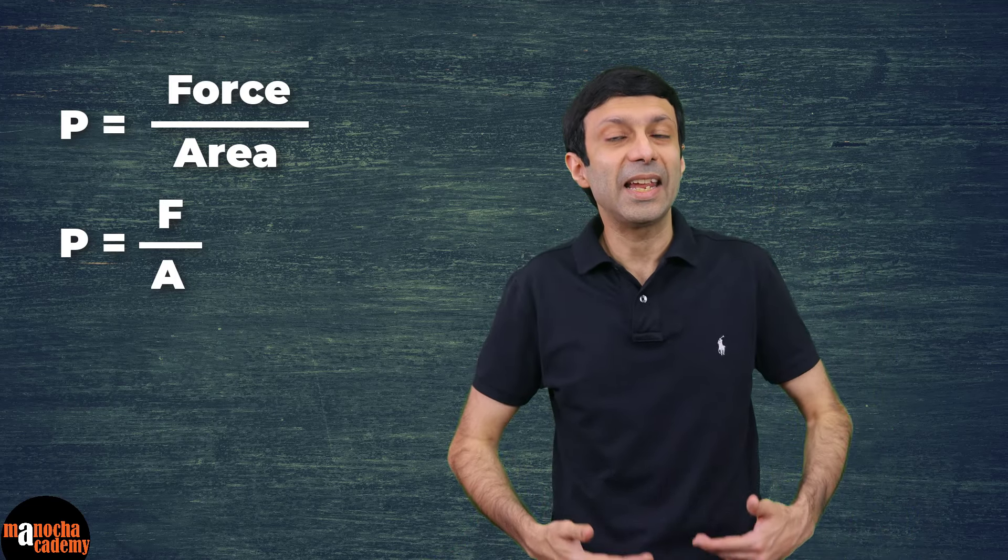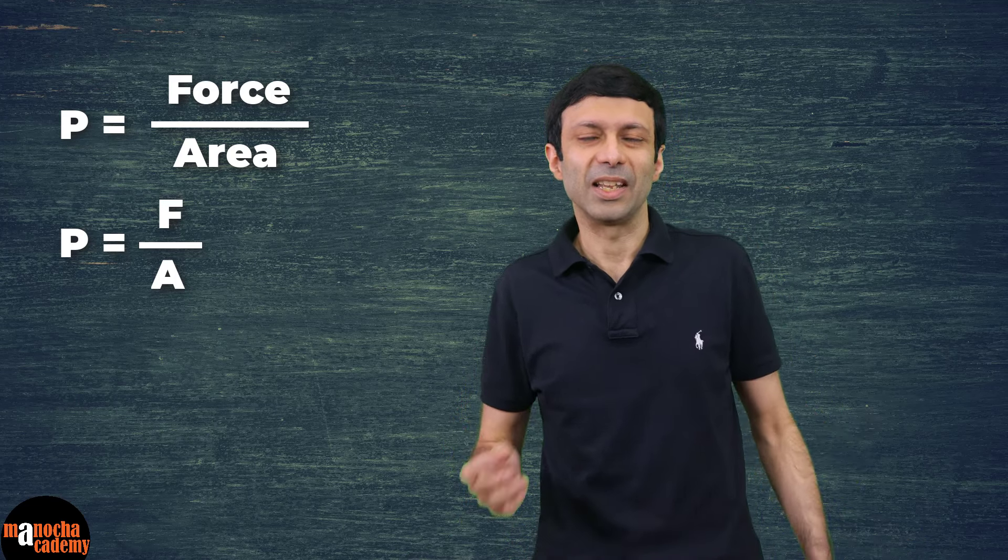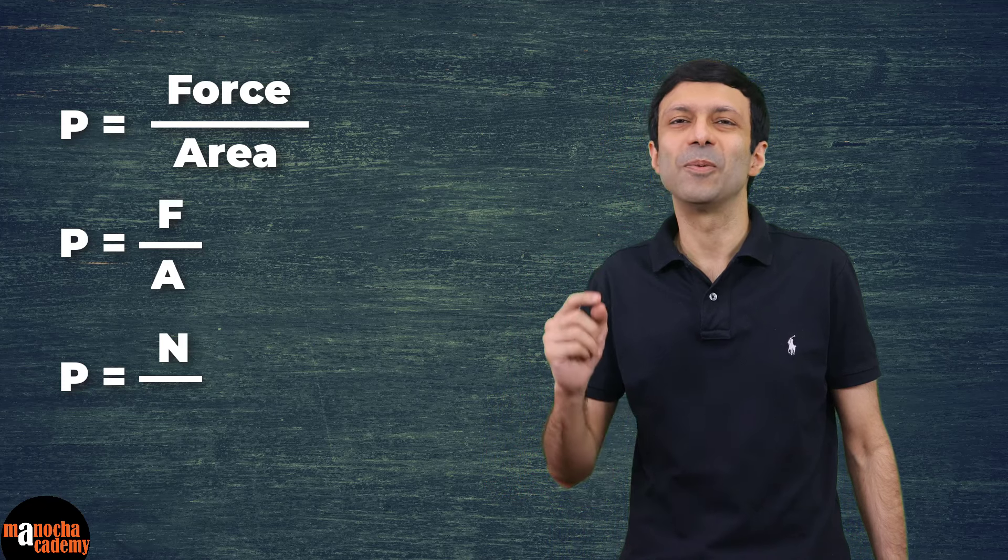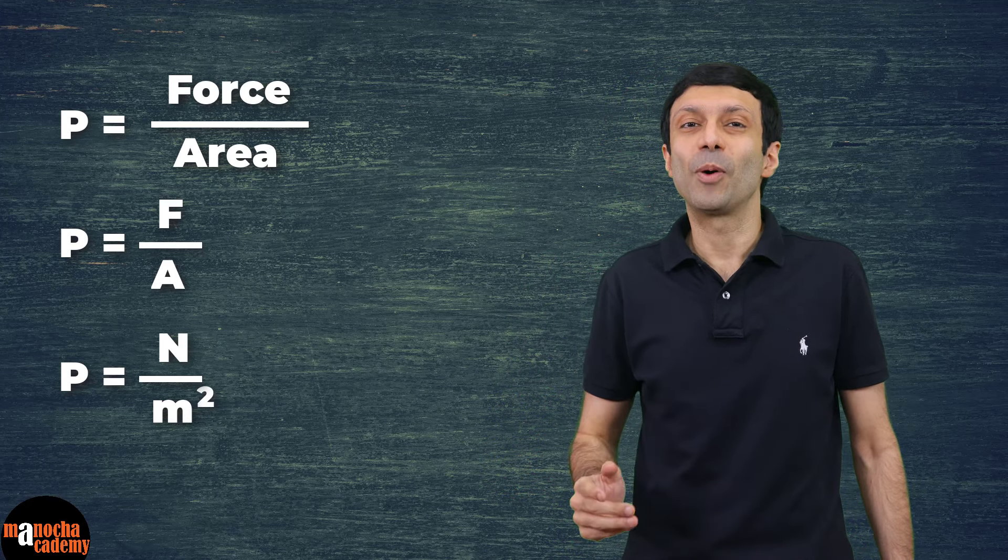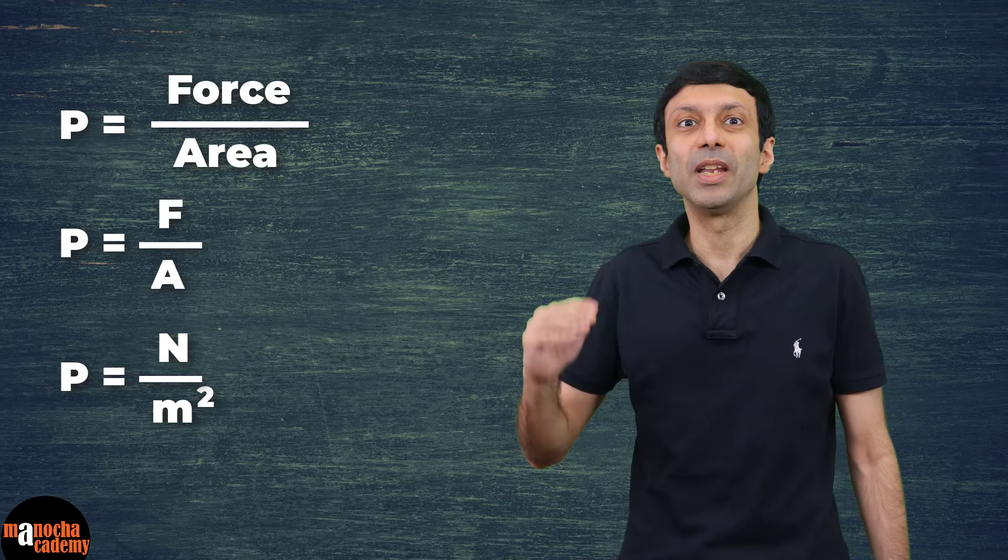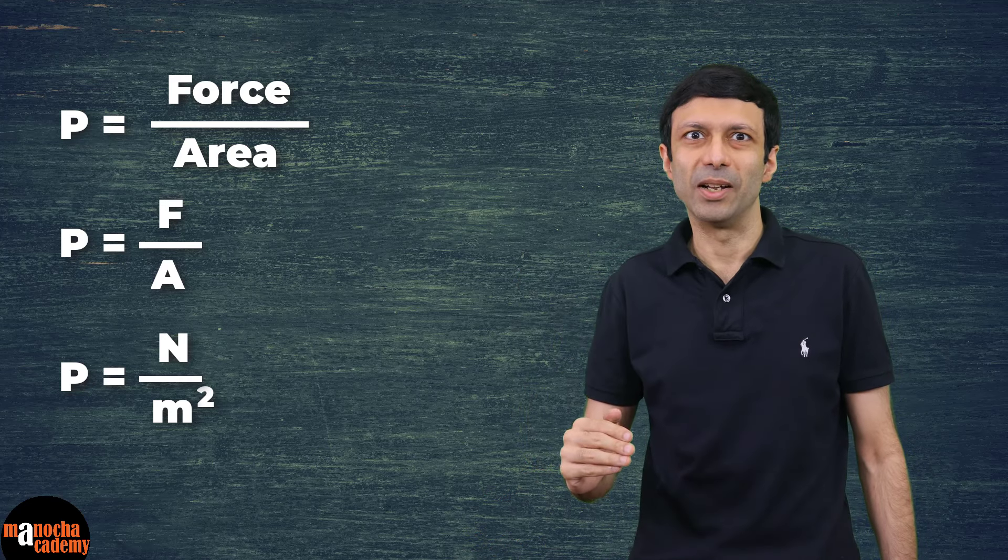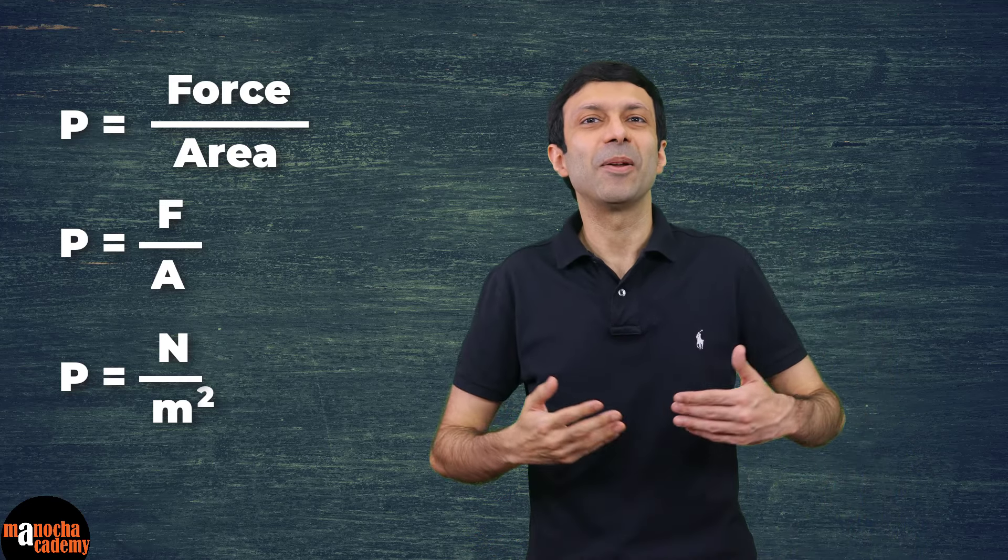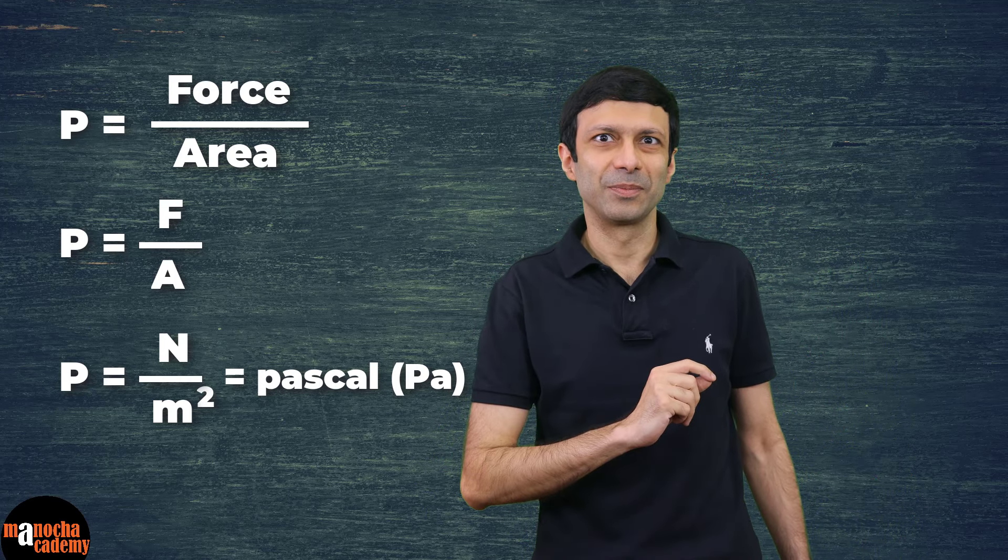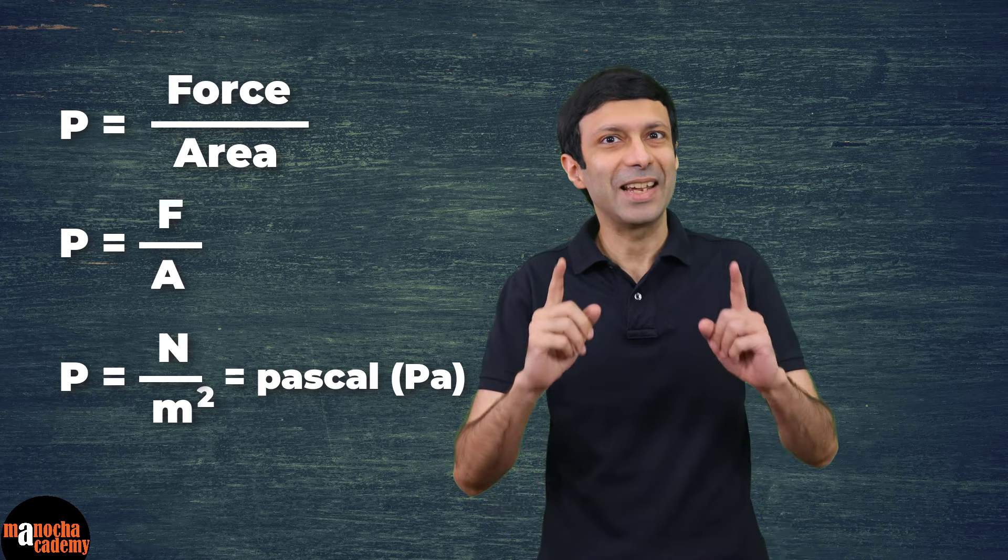Now do you know what is the SI unit of pressure? SI unit of force is Newton and SI unit of area is meter square. So from the pressure formula, you can see the SI unit of pressure is going to be Newton per meter square. This is also known as Pascal or written as PA in short. So the SI unit of pressure is Pascal.